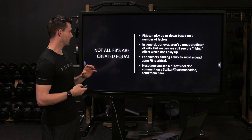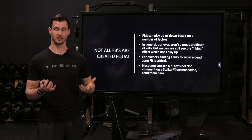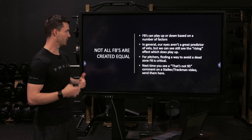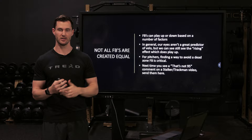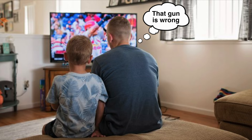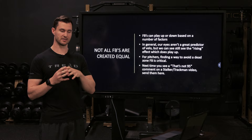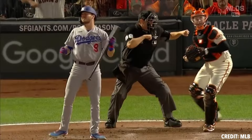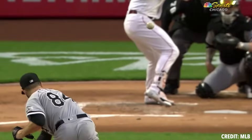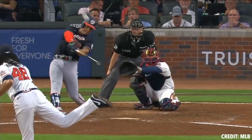The point is not all fastballs are created equal — they can play up or down based on a number of factors. Our eyes aren't a great predictor of velocity, though that doesn't mean we can't see the actual rising or sinking effect. Hitters have trouble with balls that rise or sink way more than league average, but we can't use that to extrapolate velocity with any real accuracy. For pitchers, it's really about finding a way to avoid the dead zone fastball — whether that's switching to a sinker profile, tweaking grip to creep vertical break up, or having some outlier characteristic so hitters aren't just teeing off on the pitch.